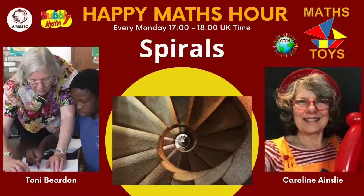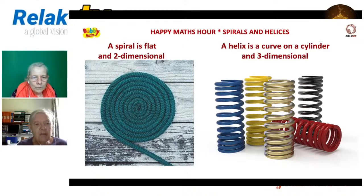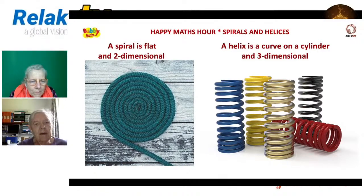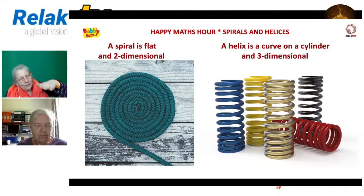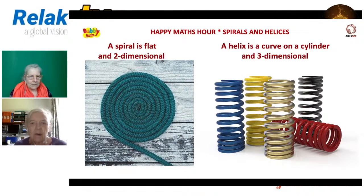We're going to talk about spirals and helices today. Here's a picture of a spiral - as Caroline was showing, it's flat and two-dimensional. That's a picture of rope coils on a deck - you can see the spiral, with the knot in the middle going around and around. On the right you have five different helices. The plural is helices - one helix, many helices.